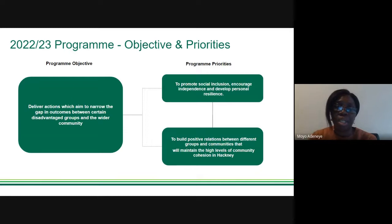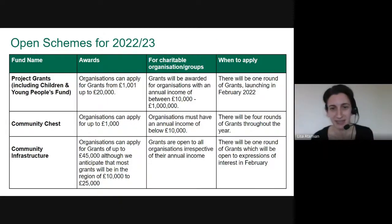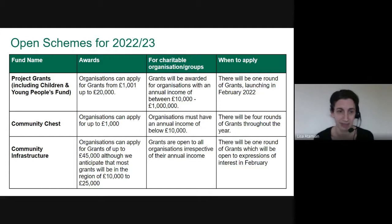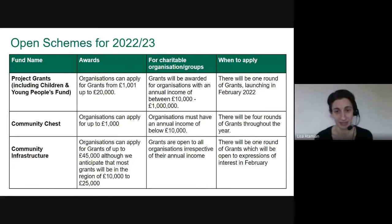This table gives an overview of all grant programs open for applications this year. We have our project grants program, which replaces the old main and small grants program. This is for applications of up to £10,000 or £20,000 depending on the income size of the organization, for projects up to 12 months in duration. Within project grants there is a separate strand for children and young people's grants, delivered in collaboration with colleagues in Young Hackney.